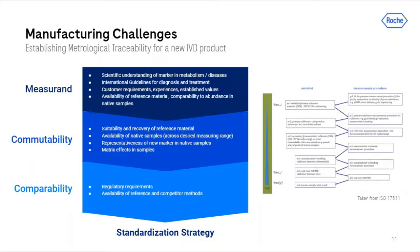In a second step, one needs to look into the commutability of potential reference materials: what is their composition, and what is the recovery of native samples when calibrating the IVD product with the reference material? Is there any matrix effect? Is the reference material representative for the measurand in native samples? Finally, the third step focuses on comparability: are reference methods available and accessible? If not, are there serum panels with assigned target values available for a validation study? What are the regulatory requirements for comparability to a reference or predicate device?